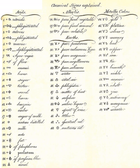Mundane elements include: antimony, arsenic, bismuth, boron, lithium, magnesium, phosphorus, platinum, potassium, sulfur, and zinc.